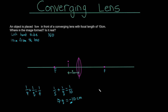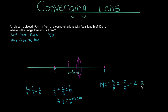Now I'm going to determine the magnification in order to draw the ray diagram. The formula for magnification is minus Q over P. Our Q is minus 10 centimeters, so that gives us 10 on the top because the negatives cancel, and the object distance is 5 centimeters. So 10 divided by 5 is 2 — a magnification of 2. That means the image will be twice as big as the object.